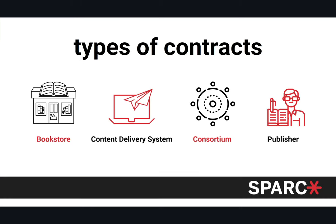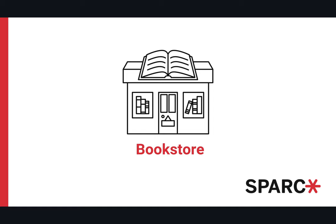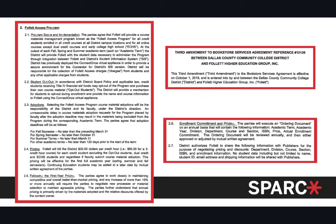Let's dive into the contracts. There are four types: bookstore, content delivery systems, consortiums, and publishers. The first type we'll look at is bookstore contracts. These are typically contracts signed as addendums to existing bookstore contracts with your university, and they'll look a little bit like this.